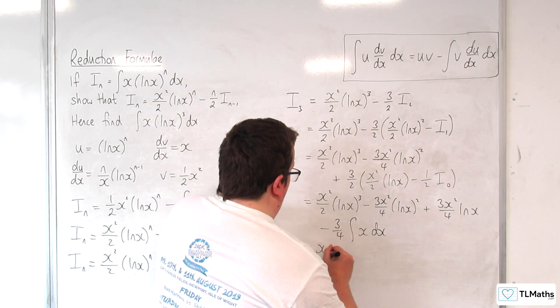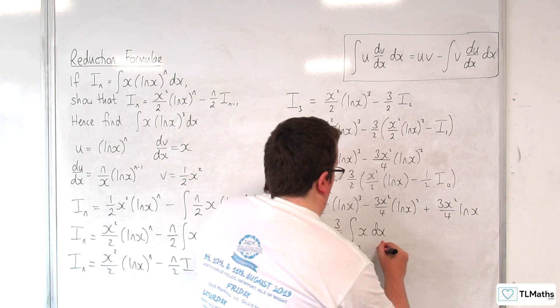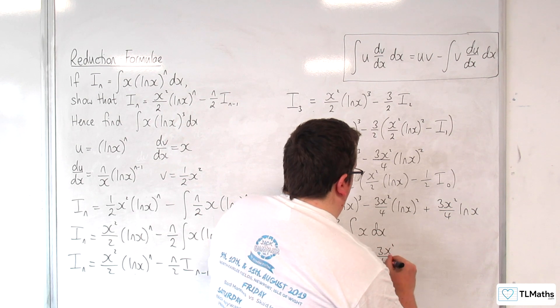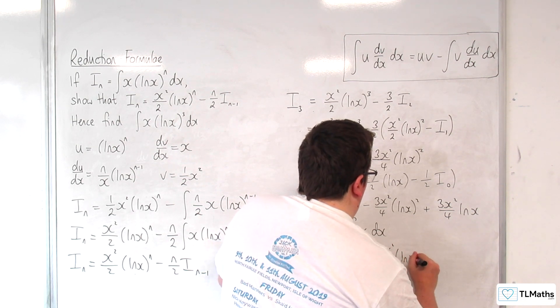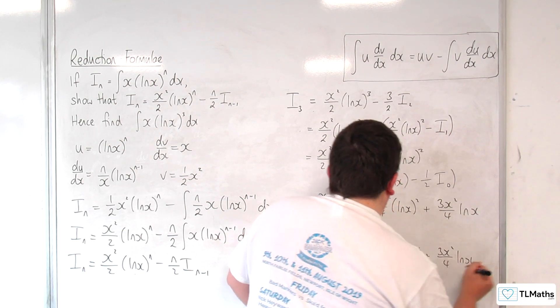So final answer, x squared over 2, log of x cubed, take away 3x squared over 4, log of x squared, plus 3x squared over 4, log of x,